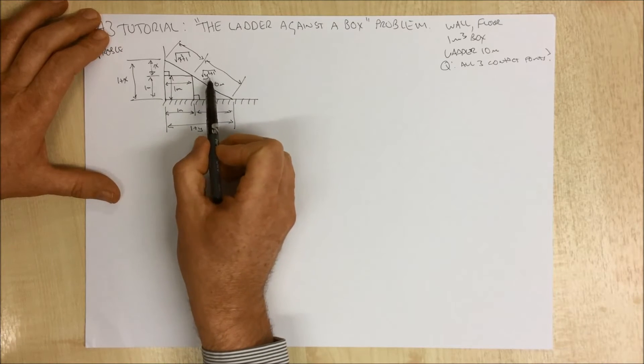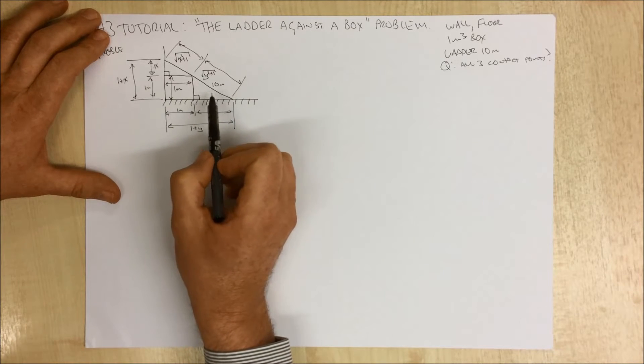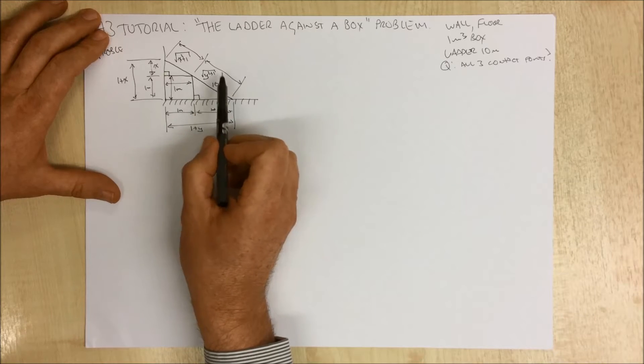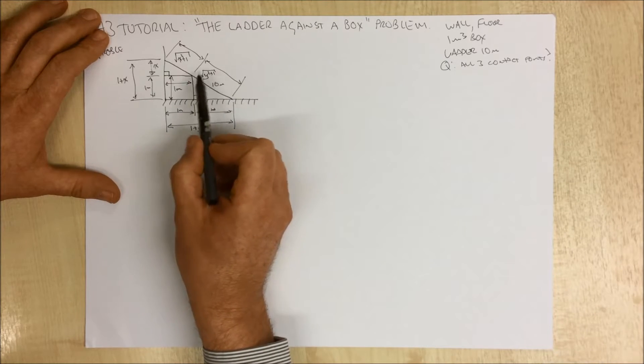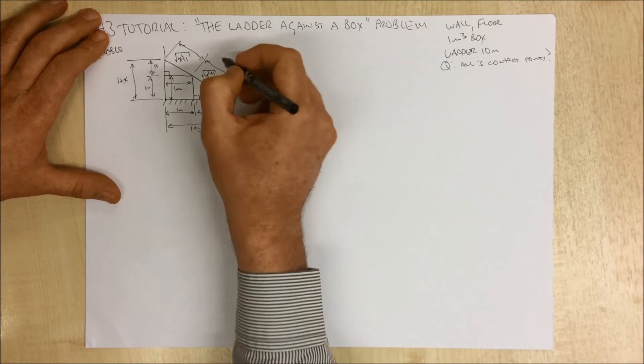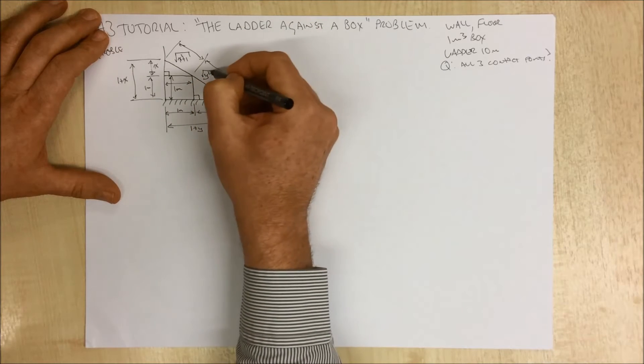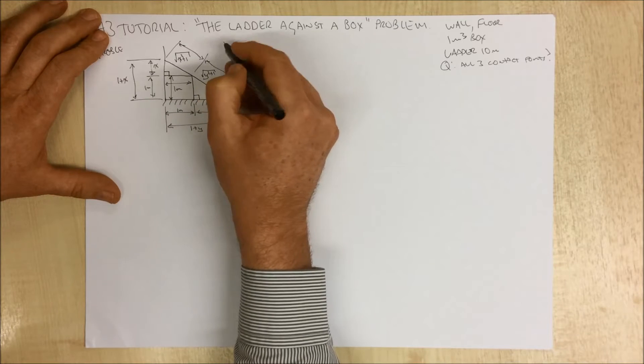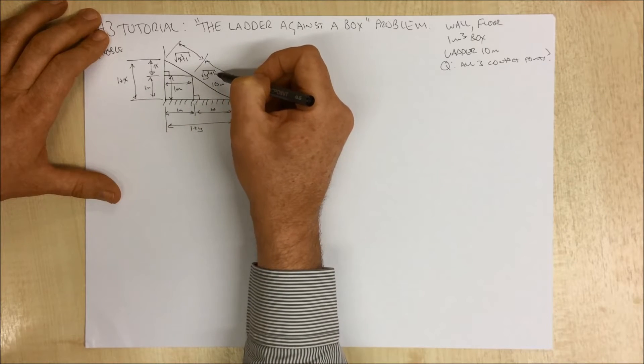Now we've got two unknown variables here, but what I'm going to do is start referencing these in terms of one unknown variable. The obvious thing here is to rename this distance.